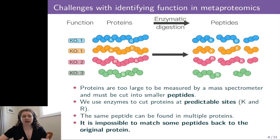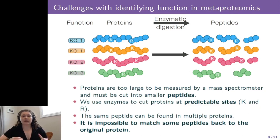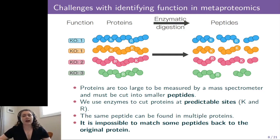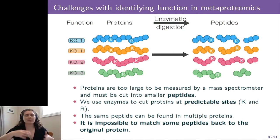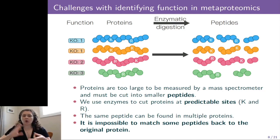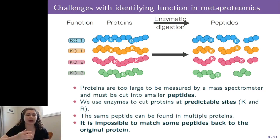However, there are some challenges to metaproteomics, and they stem from the fact that proteins are too large to be measured by a mass spectrometer, and we first have to cut them into smaller peptides. We use enzymes to cut proteins into smaller peptides at predictable sites — in this case, amino acids K and R, which are lysine and arginine. This is good because it means we can create a database in silico in order to match spectra back to peptides, but it's also bad because the same peptide can be found in multiple proteins due to evolution or just the presence of multiple species. This means that it's impossible to match some peptides back to the original protein.